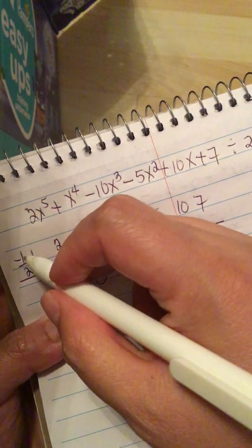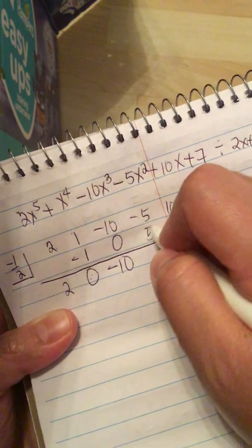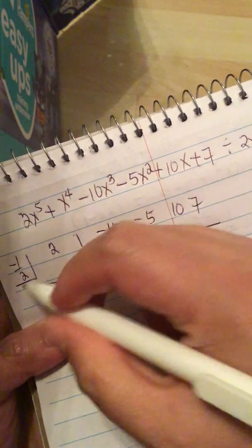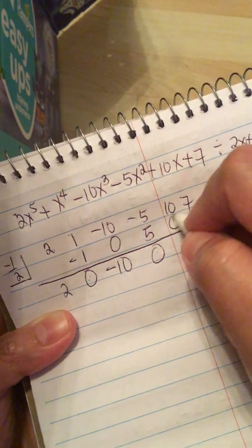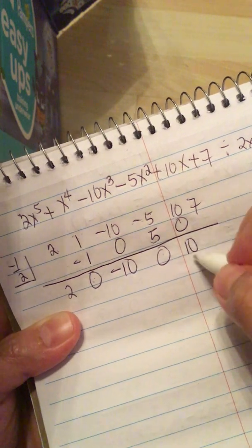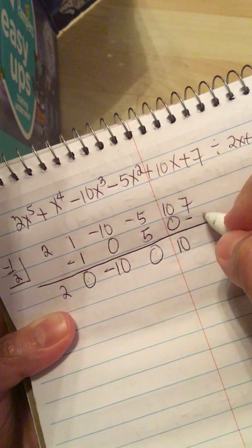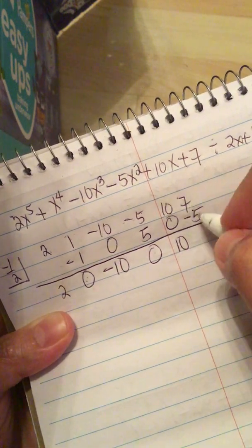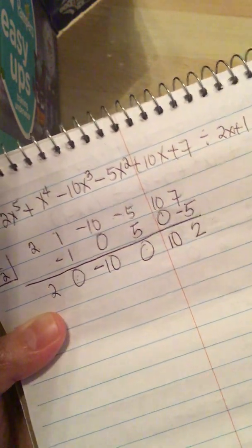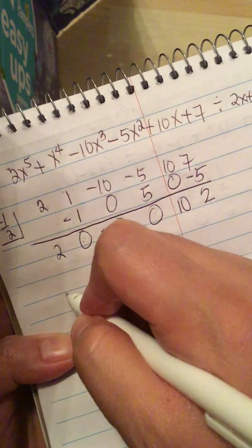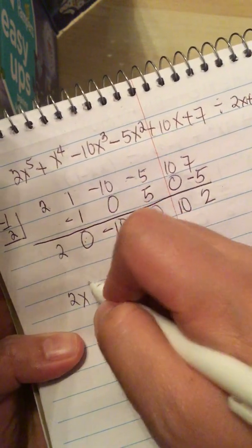Minus 10 times a minus 1 half is a positive 5. And minus 5 plus 5 is 0. 0 times 1 half is 0. And this is 10. 10 times a negative 1 half is a minus 5. 7 minus 5 is a 2.